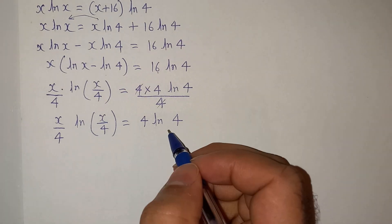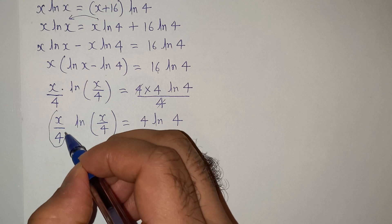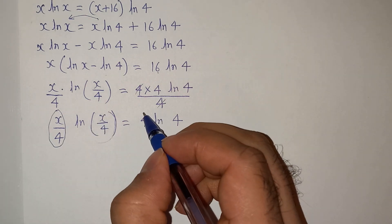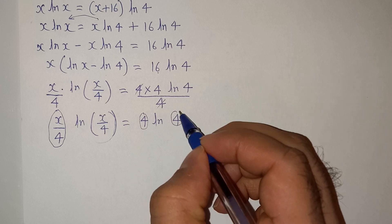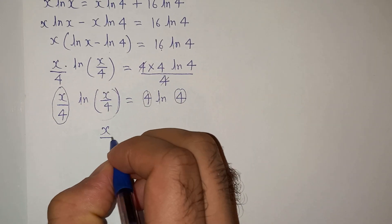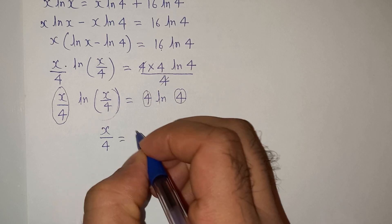this 4 and 4 will cancel so we have 4 log 4. So you can see that we have the same expression on left hand side and on the right hand side, this x by 4 and this x by 4, and we have this 4 and this 4. So we can say that x by 4 equals to 4.